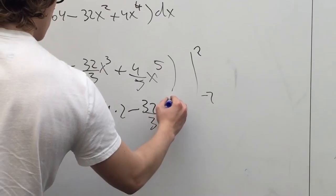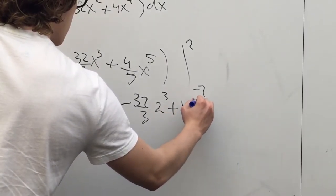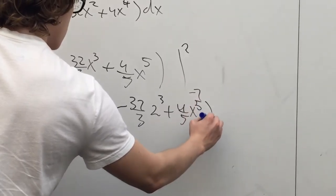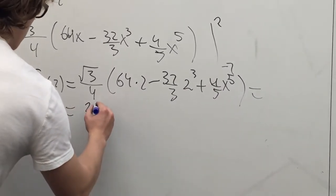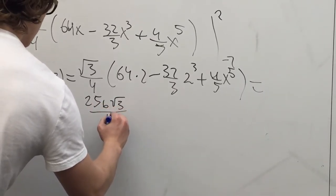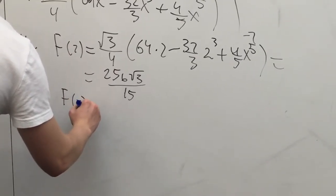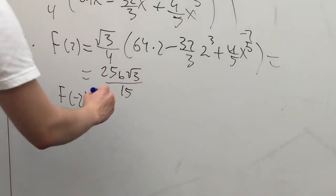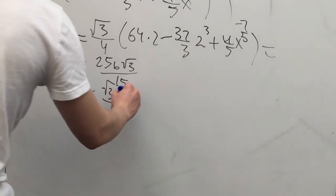At 2, we have F(2) equals square root of 3 over 4 times (64 times 2 minus 32 over 3 times 2 cubed plus 4 over 5 times 2 to the fifth), which equals 256 square root of 3 over 15.